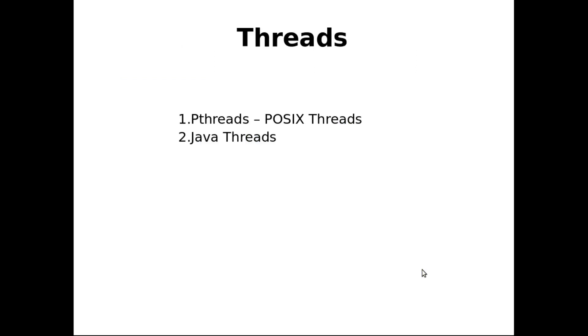So now for thread programming, we will be using PThreads, and we will also be discussing Java threads. PThreads stands for POSIX Threads, and is actually a thread library based on a thread API standard that was developed by IEEE. We will use this PThreads library and write some programs that use multiple threads, and we will also discuss Java threads. In this class I'd like to stop here. In the next class we will look at POSIX Threads — how to create threads and how to join threads. Thank you.